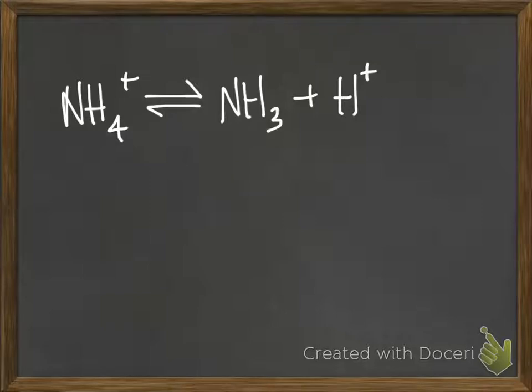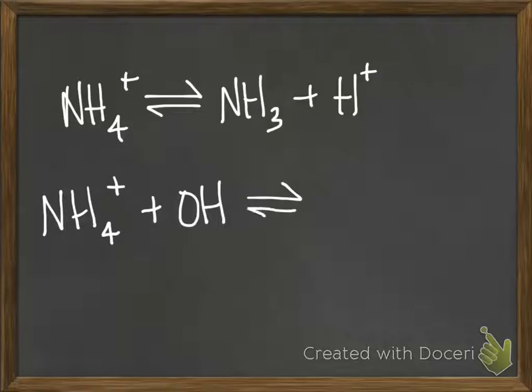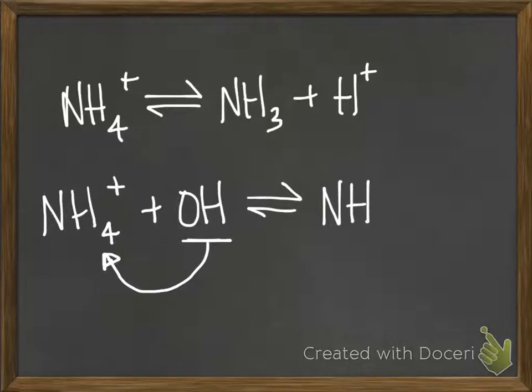Another way you could write this to really show what's happening is you have NH4+ and you're adding hydroxide to it. That OH- is going to react with NH4+ by taking one of the protons. Actually, NH4+ is going to give it to it—it depends on the way you look at it. But that's going to produce NH3 and H2O.